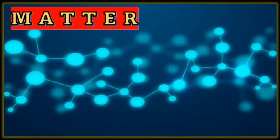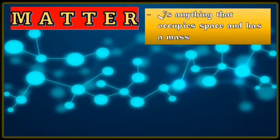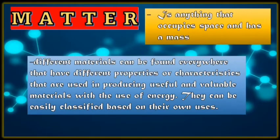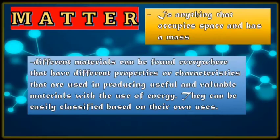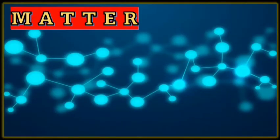But my question now is, what is matter all about? A matter is anything that occupies space and has a mass. We all know that different materials can be found everywhere — lahat yan, nakikita natin kung saan-saan — that have different properties or characteristics that are used in producing useful and valuable materials with the use of energy. They can be easily classified based on their own uses. But take note, class, that some types of matter or materials have properties that make them good materials for producing useful products.